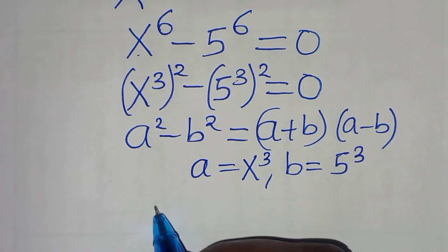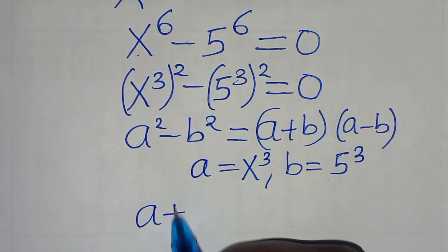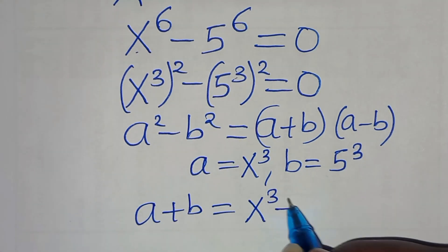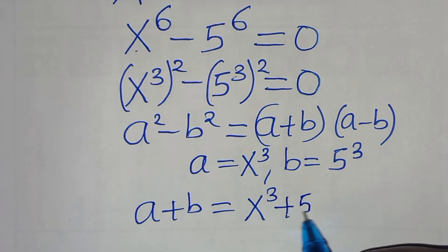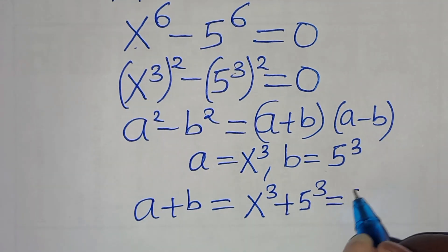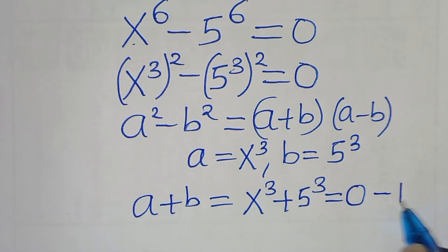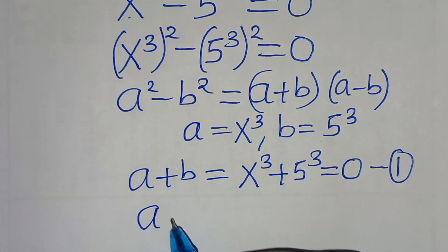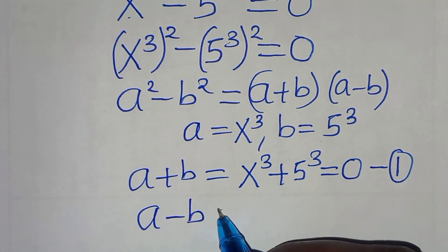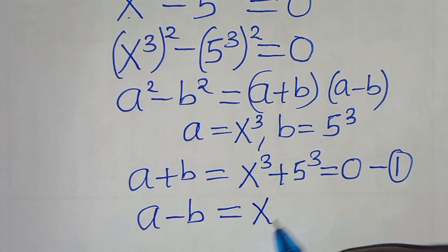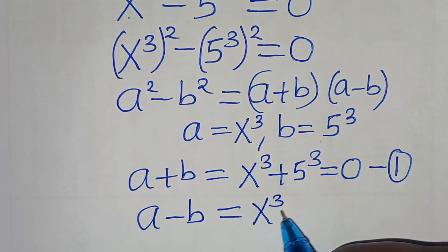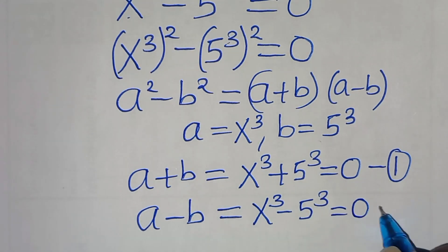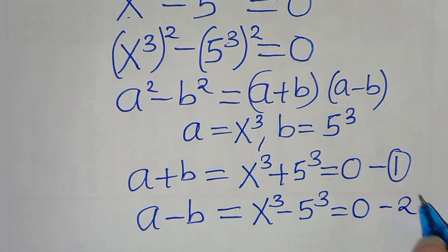So we have a plus b, which is x to the power of 3 plus 5 to the power of 3, equal to 0 — call this equation 1. And a minus b, which is x to the power of 3 minus 5 to the power of 3, equal to 0 — call this equation 2.